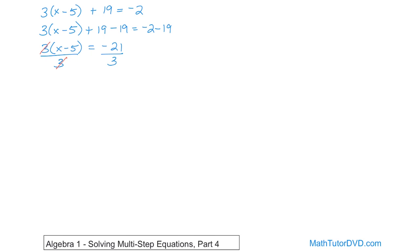3 divided by 3 is 1, so they go away, and I'm left with x minus 5, dropping the parentheses on the right. What do I have? Negative 21 divided by 3 is negative 7, because negative divided by positive is negative.